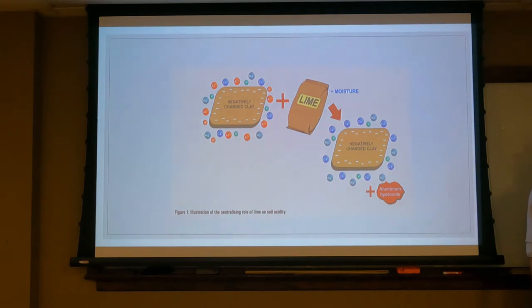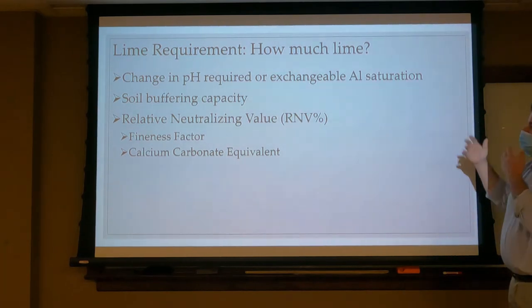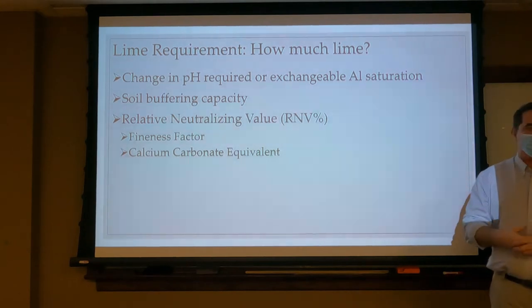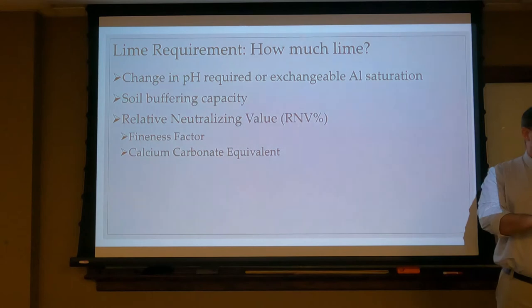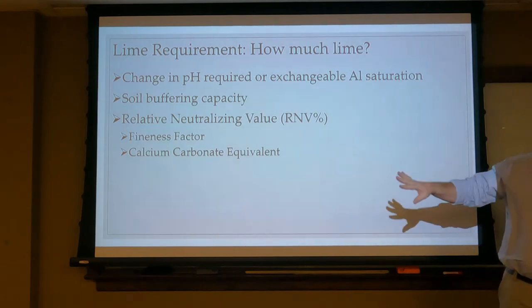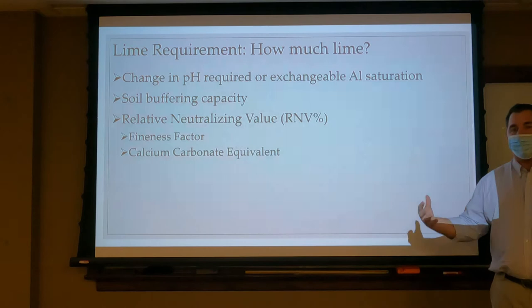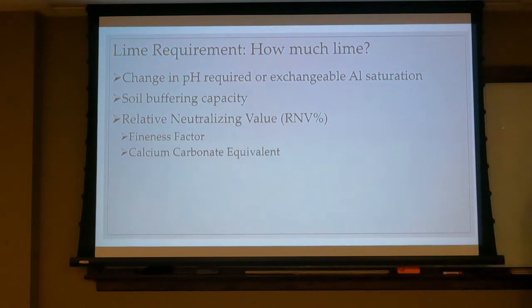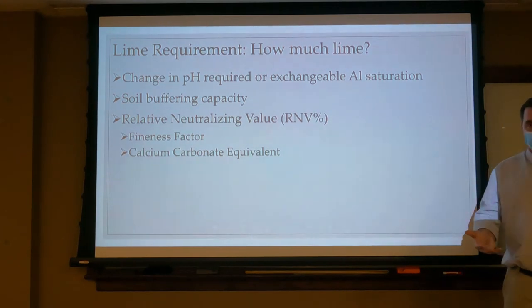The way our liming requirement works: we send it off to the lab, the lab performs our buffer pH, figures out a lime requirement, and gives us back a recommendation based on our base saturation and acid saturation. That equation is for soil chemists — just understand that when you send the soil test off and it comes back, they've done all this work. Now it's up to us to find the material we need to meet that recommendation. Our RNV is composed of two things: the fineness factor and the purity of the liming material — the calcium carbonate equivalent.